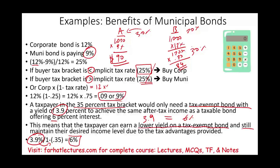This means a taxpayer can earn a lower yield on a tax-exempt bond and still maintain their desired after-tax income. If they earned 6% on the corporate bond in the 35% tax bracket, they only keep 6% × 0.65 = 3.9%. You want to be comfortable computing the after-tax yield for municipal bonds, because this is what you'll be asked on the exam. You could also be asked a simple question with a list of interest items — some municipal bonds — and asked to compute what's included in taxable income. The answer is: municipal bond interest is not included.